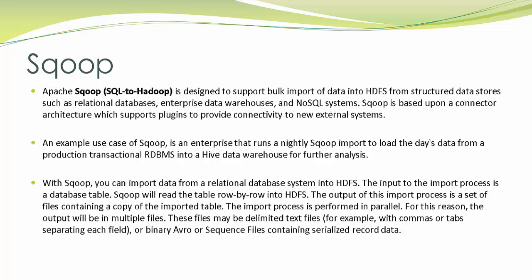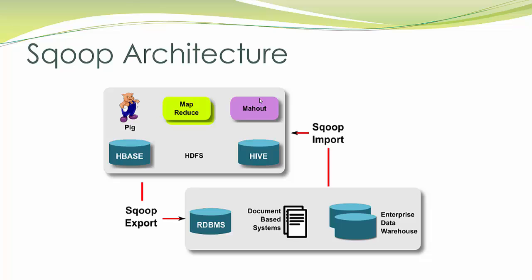Sqoop packages this class into a JAR and submits it to the job tracker. These abilities allow you to quickly develop MapReduce applications that use the HDFS-stored records in your processing pipeline. You are also free to parse the delimited record data yourself using any other tools you prefer. After manipulating the imported records you may have a result data set which you want to export back to one of the relational databases.